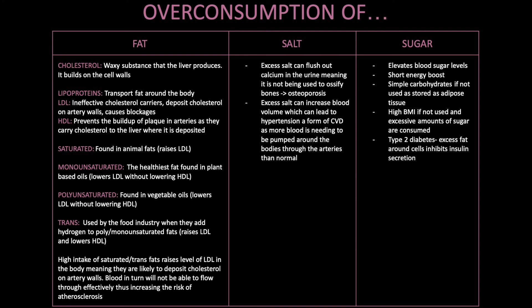Salt: excess salt can flush out calcium in the urine, meaning it is not being used to ossify bones, which can lead to osteoporosis. Excess salt can also increase blood volume, leading to hypertension — a form of cardiovascular disease — as more blood needs to be pumped through the arteries. Sugar: elevates blood sugar levels, providing a short energy boost as a simple carbohydrate. If not used, it is stored as fat tissue, leading to high BMI. Excessive amounts of sugar can also contribute to type 2 diabetes, as excess fat around cells inhibits insulin secretion.